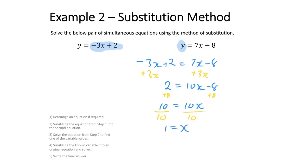Now that we have our x value, we can substitute it back into one of the original equations. Choosing the second equation: y equals seven x minus eight. Substituting x equals one gives us seven times one minus eight, which is seven minus eight, so y equals negative one.